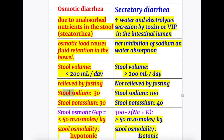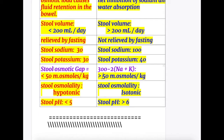The stool sodium is 30 in osmotic diarrhea, whereas it is 100 in secretory diarrhea — this is a main difference. Stool potassium is 30 in osmotic diarrhea and 40 in secretory diarrhea.